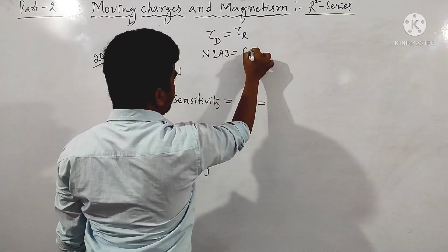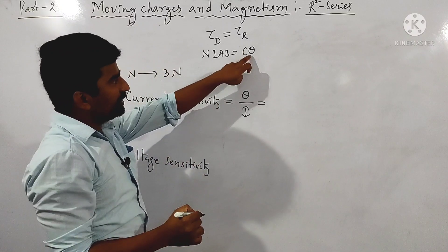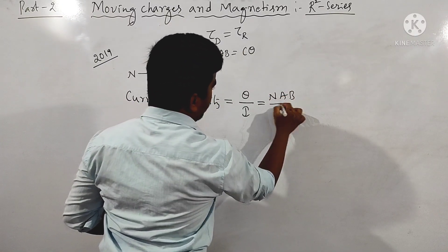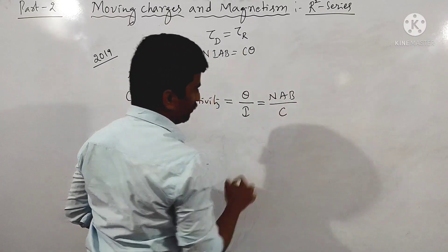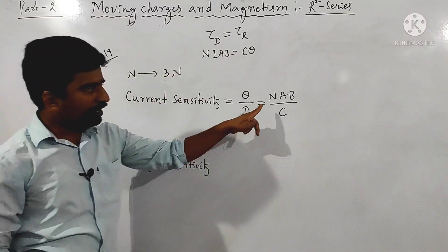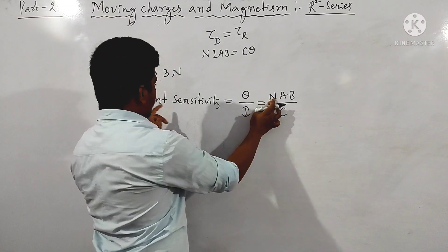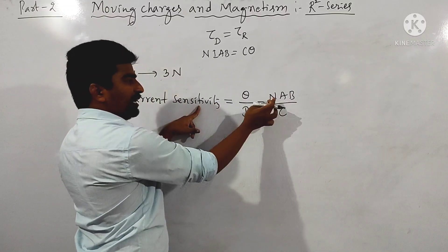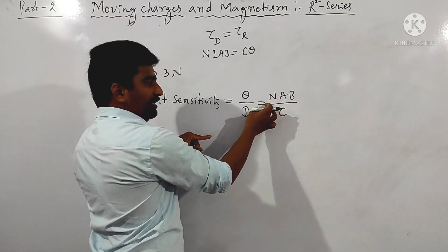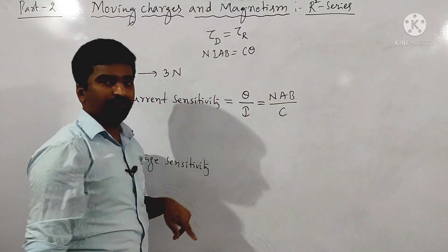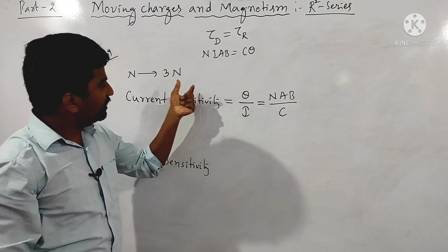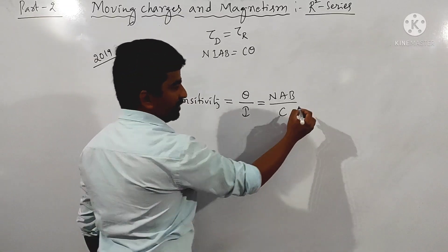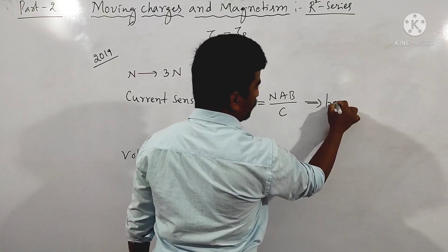Deflecting torque equals niAB and restoring torque equals C times theta. So theta divided by i equals nAB divided by C. This is the current sensitivity formula. Since current sensitivity is directly proportional to n, when the number of turns is tripled, current sensitivity is also tripled.